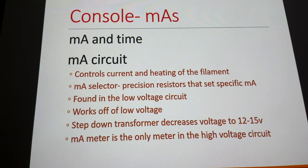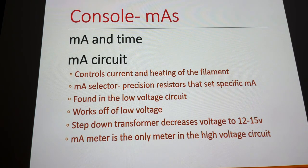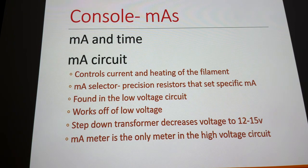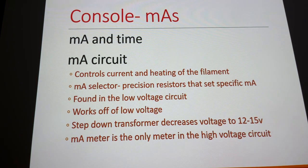What we have before exposure is MA. When you depress the prep button, you're only heating the filament. The more you heat the filament, the more electrons you collect in your space charge — your electron cloud — before sending them across the tube. MA is just heating of the filament to get it ready before we send electrons across to make X-rays. The MA selector is also a type of rheostat — it's your auto transformer for KVP, but MA selector is also a rheostat, increasing or decreasing current through precision resistors.